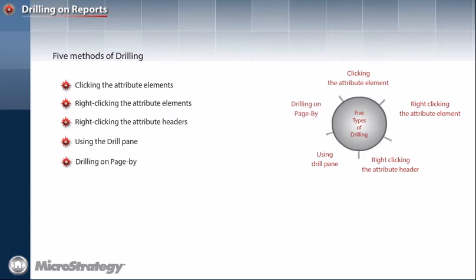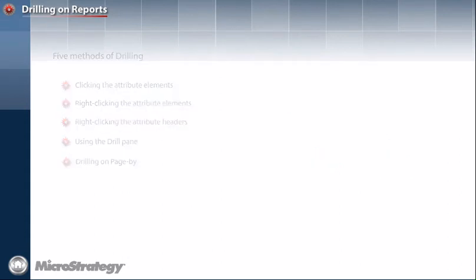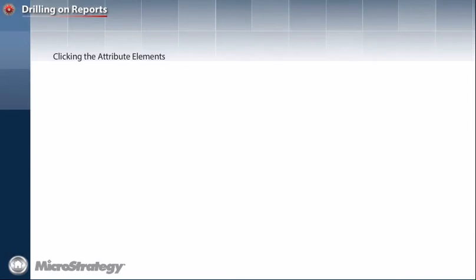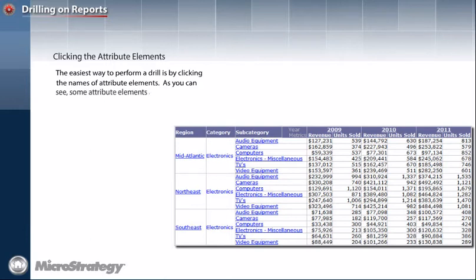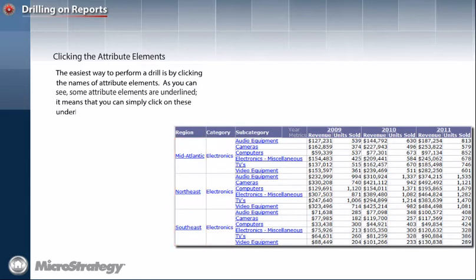For the next few slides, we will concentrate our discussion on the first drilling method, which is by clicking the attribute elements. The simplest and easiest way to perform a drill is by clicking the names of attribute elements. As you can see, some attribute elements are underlined, meaning you can simply click on these underlined elements to drill a level down.